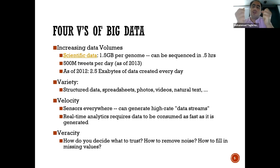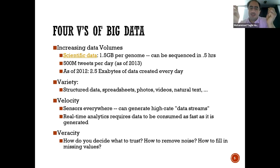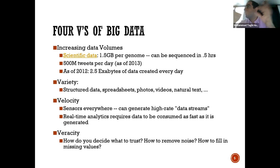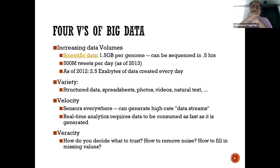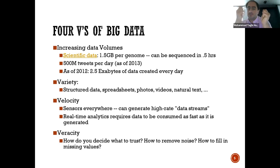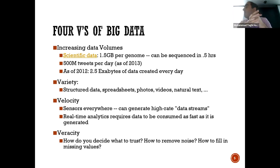Variety essentially means that you may get data from different sources. A person can be described from lots of angles — structured data, photos, videos, emails, spreadsheets — and you can combine all of them, which is how you create that avatar. Velocity is another dimension: sometimes data is generated and you need to consume it very fast. There are real-time data from sensors that you need to process right away, using streaming algorithms.